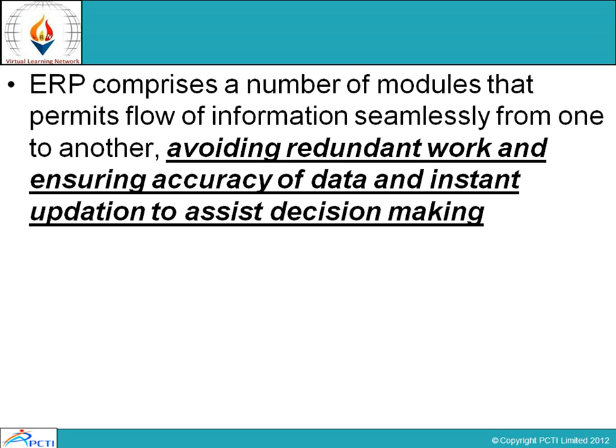How does ERP achieve seamless flow of data from one part to another part of the organization? That is by avoiding redundant work, reducing duplicacy of work, and by ensuring the accuracy of the data. The most beautiful feature of ERP is instant operation that helps decision makers get assistance. In nutshell, ERP assists decision makers to get instant data updates, accuracy of data, and reduction of data redundancy — helping them a lot in reaching a decision.